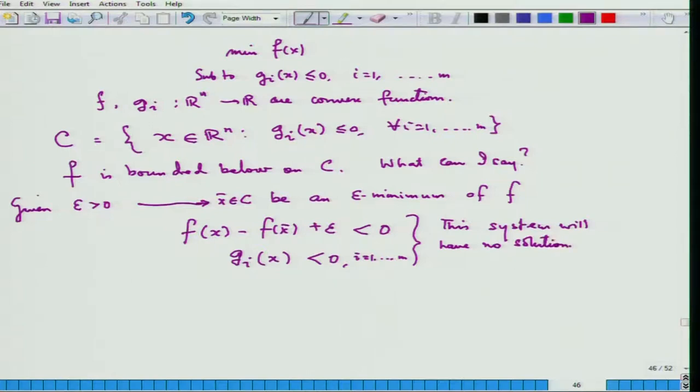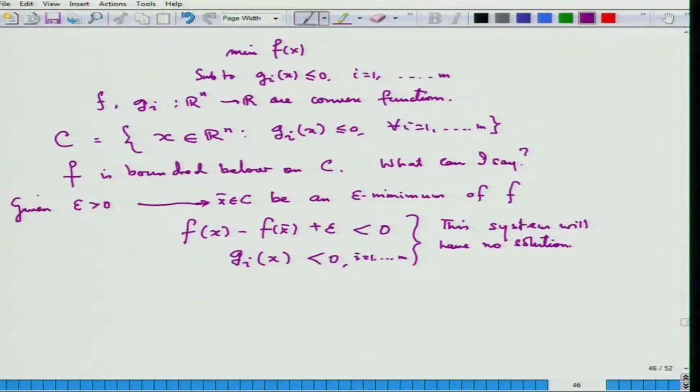If x_bar is an epsilon solution, then the system — f(x) minus f(x_bar) plus epsilon less than 0 and g_i(x) less than or equal to 0 for all i — has no solution, because if there were an x satisfying this, it would contradict the fact that x_bar is an epsilon minimum.